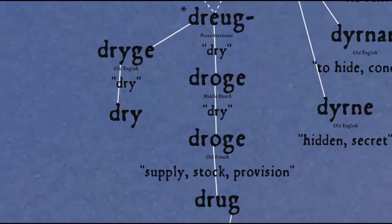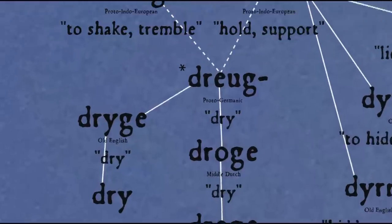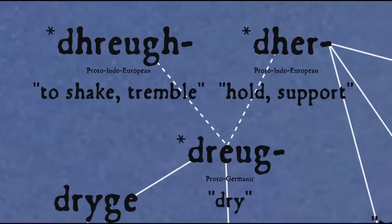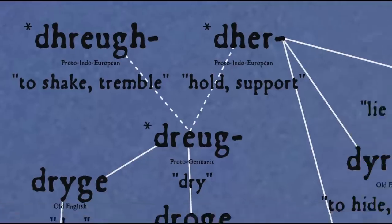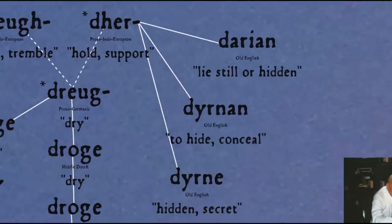The word 'drug' comes from Old French 'drogue', meaning supply, stock, provision, perhaps from Middle Dutch 'droge' (dry), in reference to the dry wares and dry barrels they were preserved in, in turn from the Germanic root 'dreug', dry — also the source of the word 'dry'. The ultimate source is uncertain; it might come from the Proto-Indo-European root 'dhreugh' (to shake, tremble), or from the root 'dher' (to hold, support), possibly related to Old English words meaning to lie still or hidden, to hide or conceal. So another connection, along with the word colour, to the idea of something hidden or concealed.